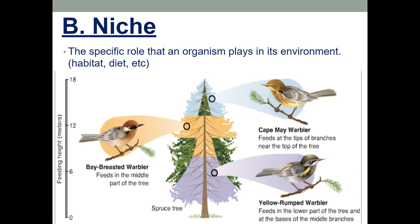Coyotes are a good example of niches because they have a wide variety of diet — they can eat snakes, birds, fruits, nuts, grass, and can basically eat almost anything they find, including hunting sheep and domestic fowl, which hurts farmers.